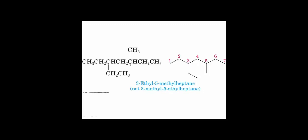When two substituents are equidistant from either end of the chain, you start numbering from the substituent whose name comes earlier in the alphabet. Ethyl (E) comes before methyl (M), so we start numbering at the ethyl end: one, two, three — ethyl — four, five — methyl — heptane. The name is 3-ethyl-5-methylheptane: ethyl in the three position, methyl in the five position.